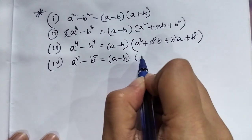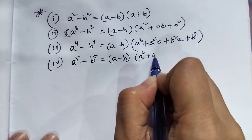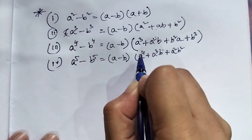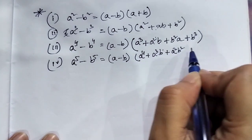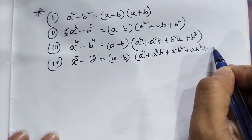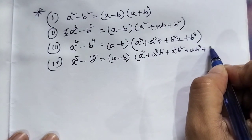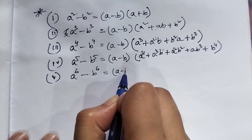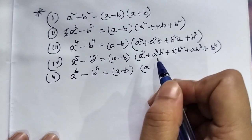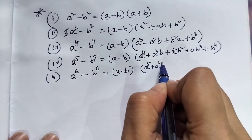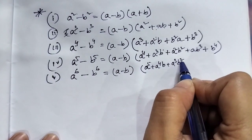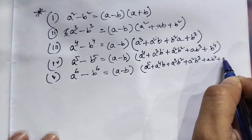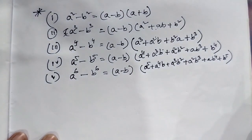a to the power 5, then plus a to the power 4 b, plus a cube b square, then a to the power 4, a cube, plus. So A to the power 6 minus B to the power 6 equals (A minus B)(A to the power 5 plus A to the power 4 B plus A cube B square plus A square B cube plus AB to the power 4 plus B to the power 5).